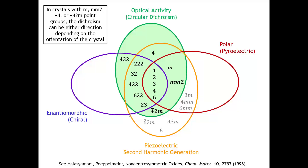The green circle on the Venn diagram shows those point groups that can give optical activity. Unsurprisingly, this includes all the enantiomorphic point groups — everything in the blue circle is also in the green circle. However, there are four additional point groups which give optical activity but are not themselves chiral. For example, a crystal with MM2 symmetry can rotate plane-polarized light either left or right depending on the direction of passage, but dissolving that crystal in solution would destroy the fixed molecular orientation and eliminate the optical activity. By contrast, molecules crystallizing in enantiomorphic space groups would be optically active even in solution.